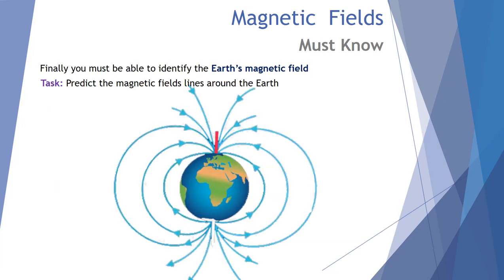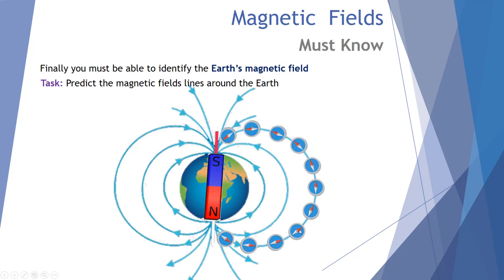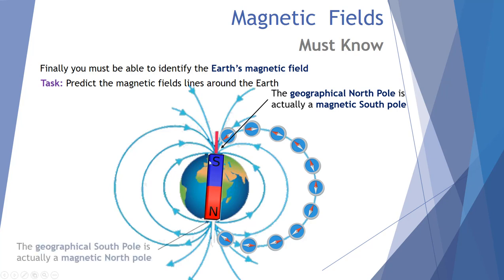The Earth has a very strong magnetic field. Without it we'd suffer all sorts of damage from ionising radiation. The field travels from the bottom of the globe to the top — south pole to north pole. Compasses align tangentially to these field lines. The geographical north pole is actually a magnetic south pole, and the geographical south pole is actually a magnetic north pole.